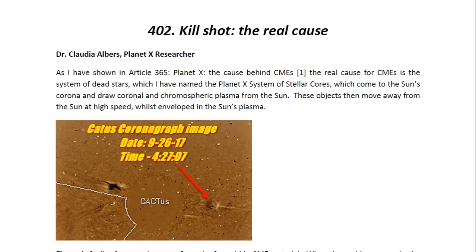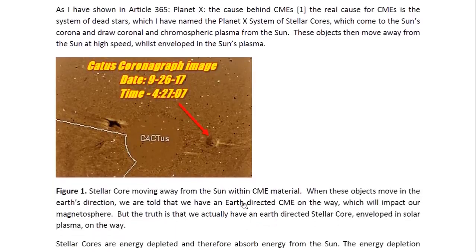As I have shown in article 365 entitled Planet X: The Cause Behind CMEs, the real cause for CMEs is the system of dead stars which I have named the Planet X system of stellar cores, which come to the sun's corona and draw coronal and chromospheric plasma from the sun. These objects then move away from the sun at high speed whilst enveloped in the sun's plasma. You can see one of these objects over here in this SOHO image moving away from the sun within CME material.